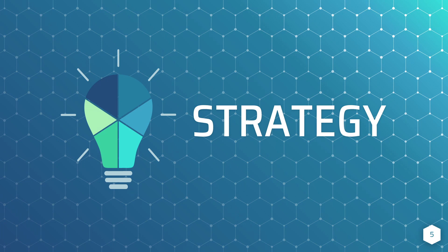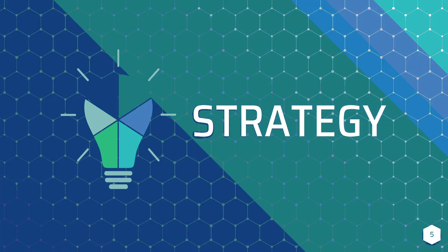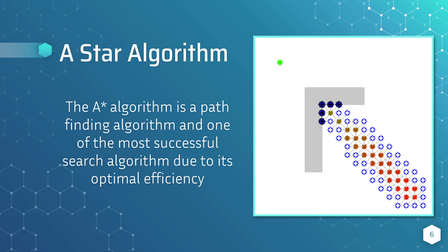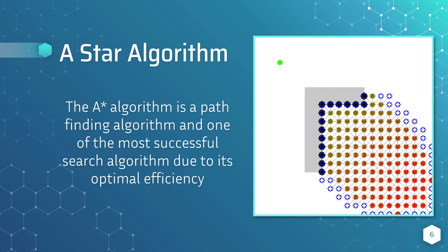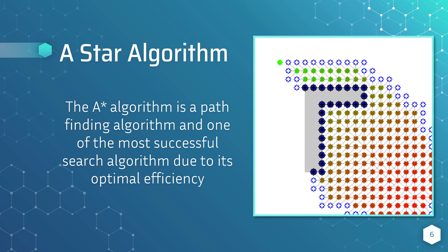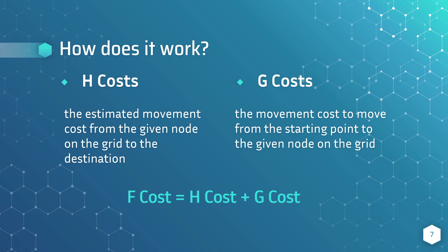To help you understand the strategies better, I will explain it further, and I will be starting with the A-star algorithm. The A-star algorithm is one of the most successful pathfinding algorithms out there due to its optimal efficiency. A demo of how it works is being shown on the right side of the screen. So how does it work? It uses three variables: the h-cost, g-cost, and f-cost.